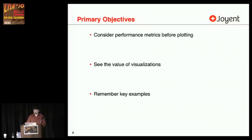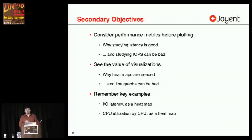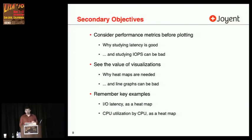That's my goal, to get across to you in less than 90 minutes. Secondary objectives: why studying latency is good, why studying IOPS can be bad — that keeps coming up when I do performance analysis and help out customers — why heat maps are needed with examples, and why line graphs can be bad. I'd like you to take with you a couple of very key important examples: one of them is IO latency as a heat map, and the other one is CPU utilization by CPU as a heat map, which I'd love to see a lot more of being used by tools out there.